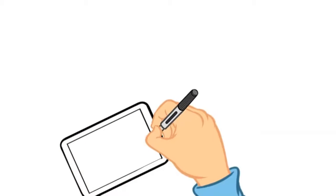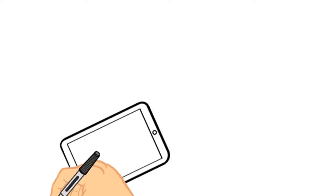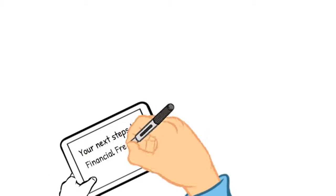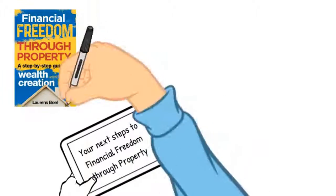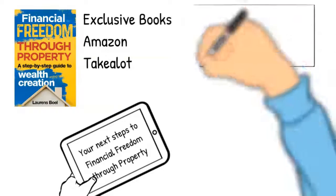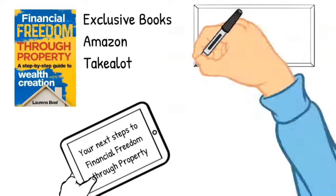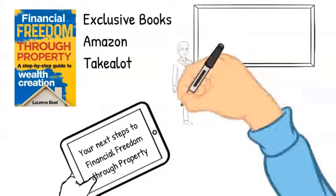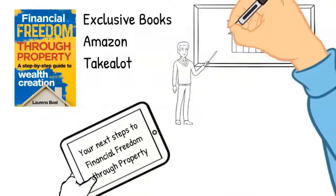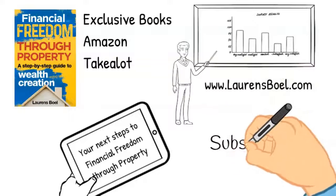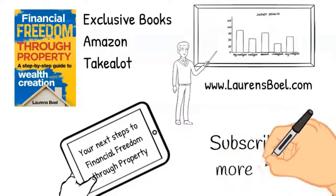Thanks for watching. If you're interested in learning more about how to become financially free through property, here are two steps. Firstly, get a copy of my book — available at Exclusive Books, Amazon, or Takealot. If you want to get more practical with property, join our online university or get a one-on-one coaching experience at www.laurencebull.com. Don't forget to subscribe.